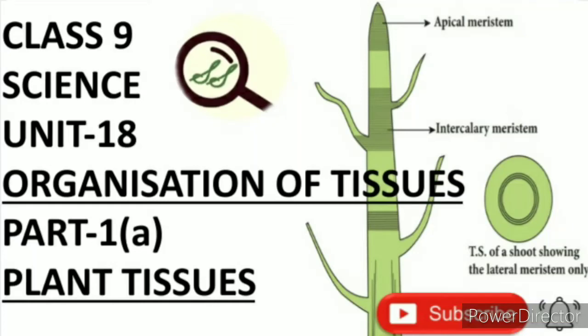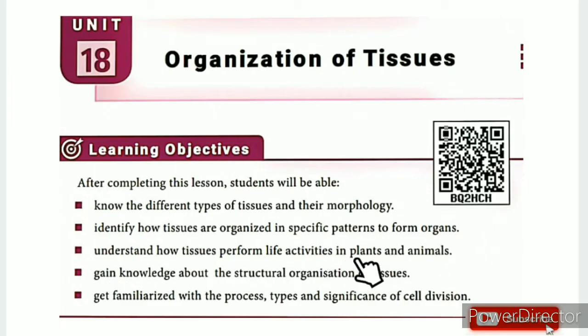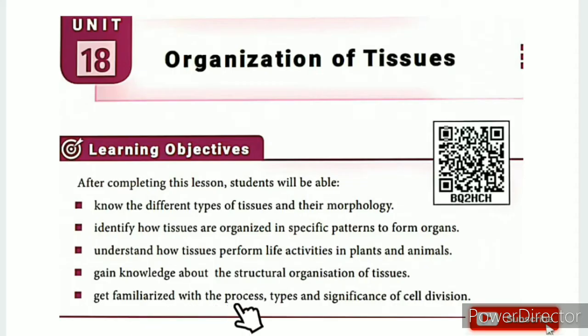Greetings from SS Class 9 Science, Unit 18: Organization of Tissues, Part 1 - Plant Tissues. The learning objectives are: know different types of tissues and their morphology; identify how tissues are organized in specific patterns to form organs; understand how tissues perform life activities in plants and animals; gain knowledge about the structural organization of tissues; get familiarized with the process, types, and significance of cell divisions.